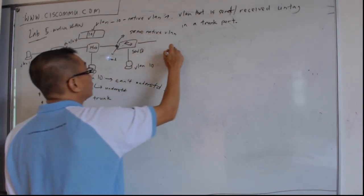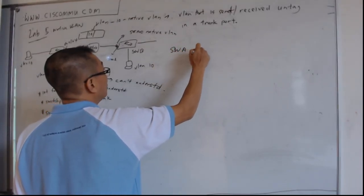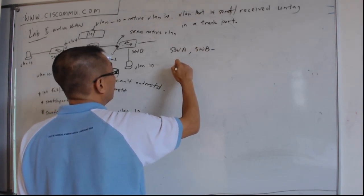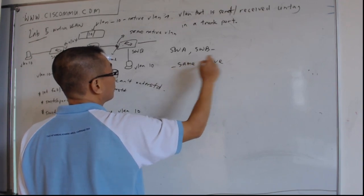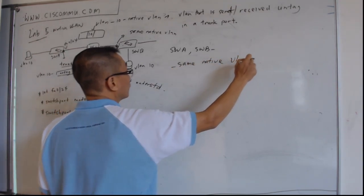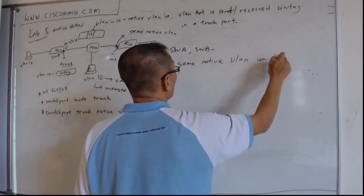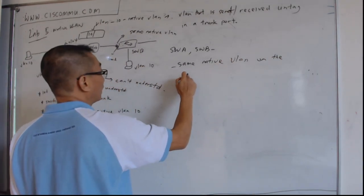Switch A and switch B must be in the same native VLAN on the trunk hop, on the connecting trunk hop.